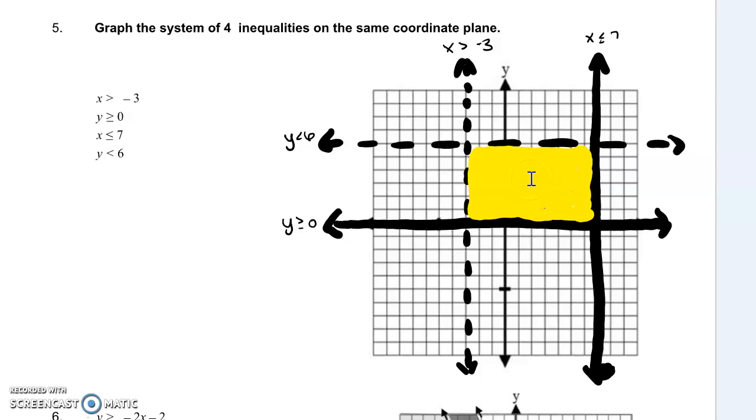You can also always check a point at this point here as well. You can check something like 2, 2 and see that 2 as my x coordinate works. It works here. 2 as my y coordinate works here and here. So 2, 2 is in the middle here. That's my solution set.